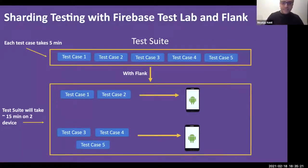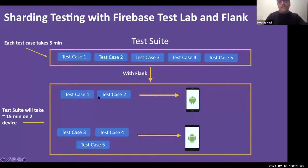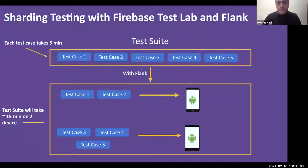With sharding enabled, the same five-test suite is split across two devices: two test cases on one device (10 minutes) and three on another (15 minutes). The overall run now takes about 15 minutes — 10 minutes less than sequential — because tests run in parallel on different devices simultaneously.